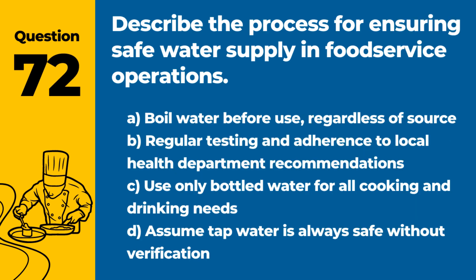Question 72. Describe the process for ensuring safe water supply in food service operations. Answer: B. Regular testing and adherence to local health department recommendations. Ensuring water safety is crucial for preventing contamination and protecting public health.